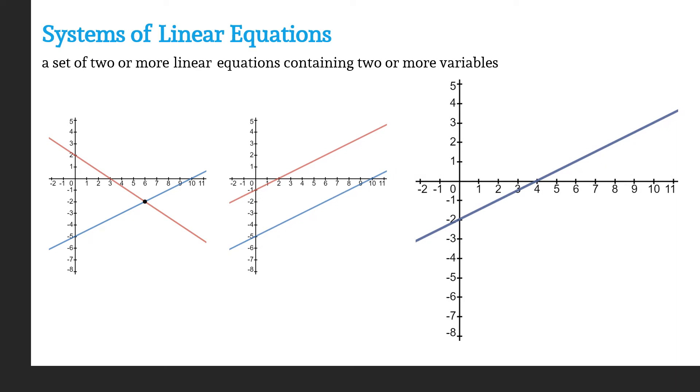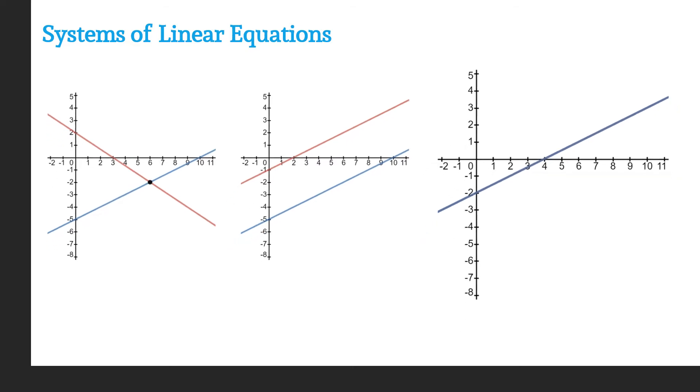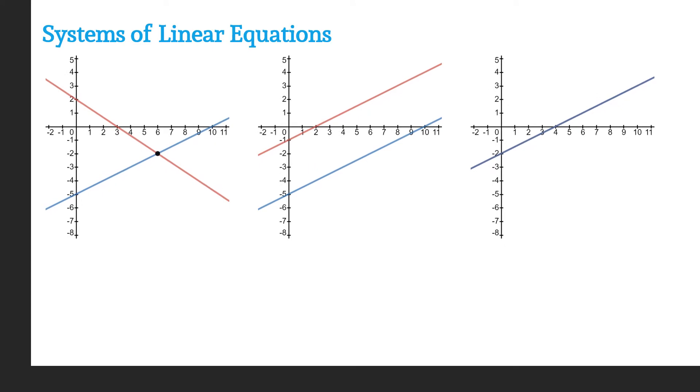In other words, one line lies directly on top of the other. Now that we know what these three systems look like graphically, let's take a moment and talk about their characteristics and how we can classify each of these systems.